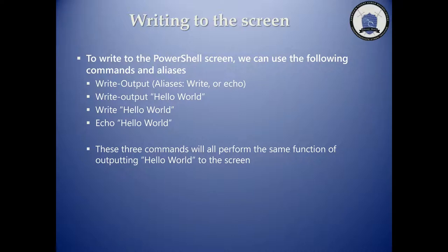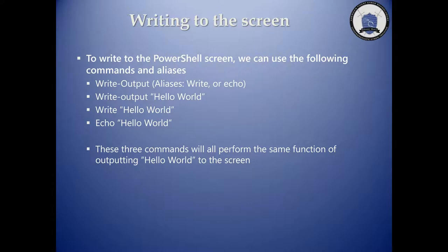Now let's talk about writing to the screen. The first method is write-output, with aliases 'write' or 'echo'. This outputs text or a variable's value to the screen. You can also use write-output with a redirect or pipeline to send output to a file — for example, 'write-output hello world' redirected to a file will store 'hello world' in that file.